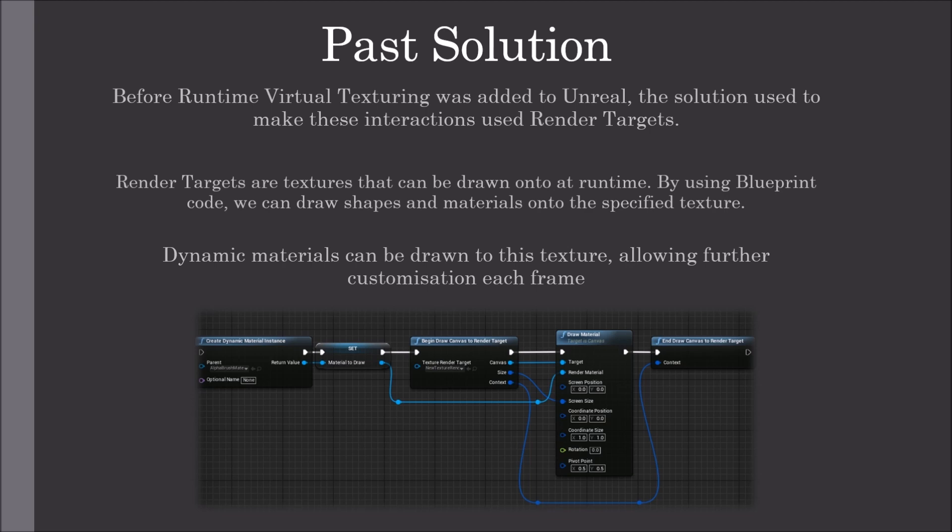When Runtime Virtual Texturing was added to Unreal, the solution used to make these interactions used render targets. Render targets are textures that can be drawn onto at runtime. By using Blueprint code, we can draw shapes and materials onto the specified texture.